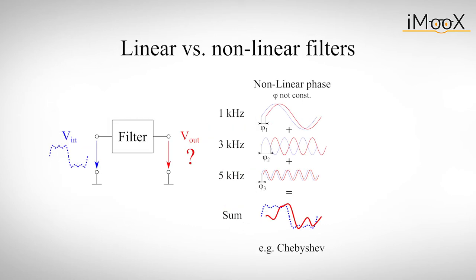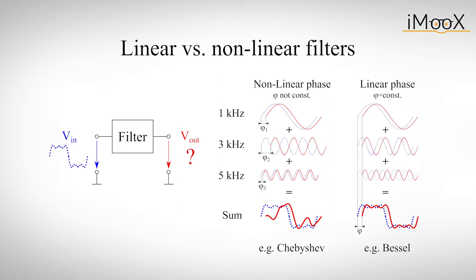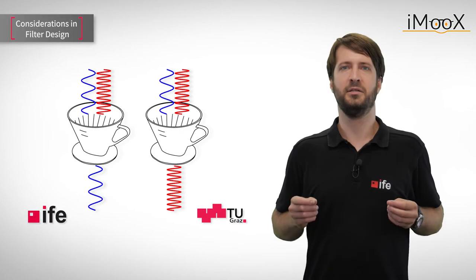As a result, the waveform of a signal in the passband will suffer distortion, which can be undesirable. So if we want a filter with constant time delay, also called a linear phase filter, we rather use a Bessel characteristic. Here the waveforms of all signals within the passband will stay exactly as they were. But then again, the Bessel filter cannot compete with the Chebyshev regarding attenuation above the corner frequency.